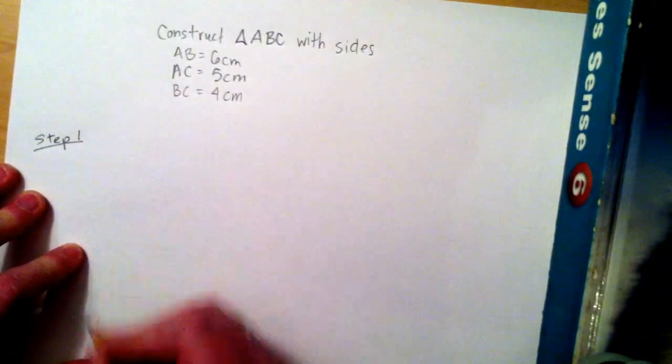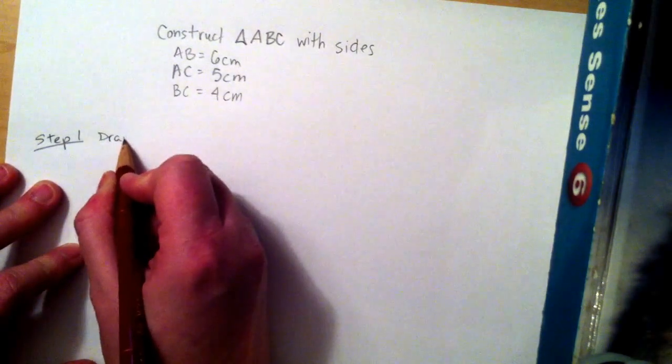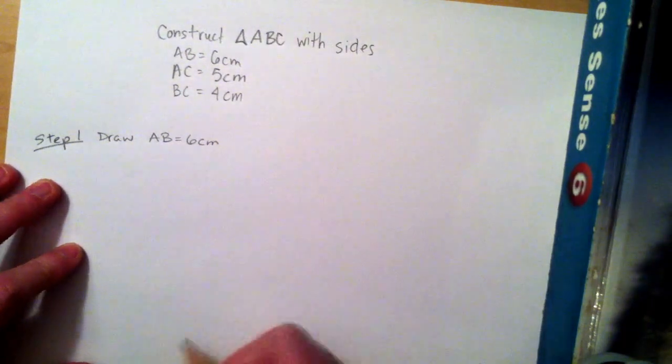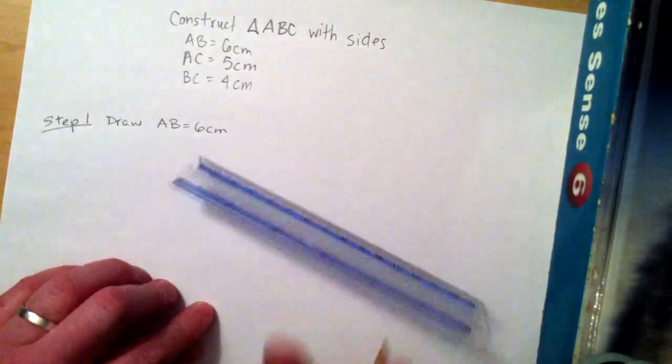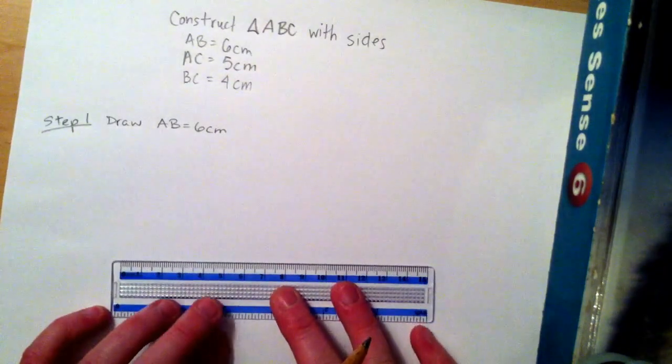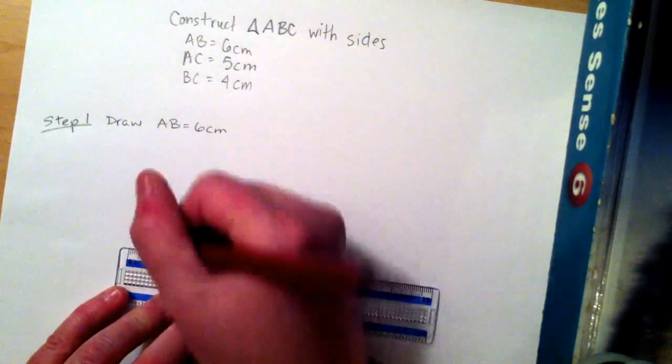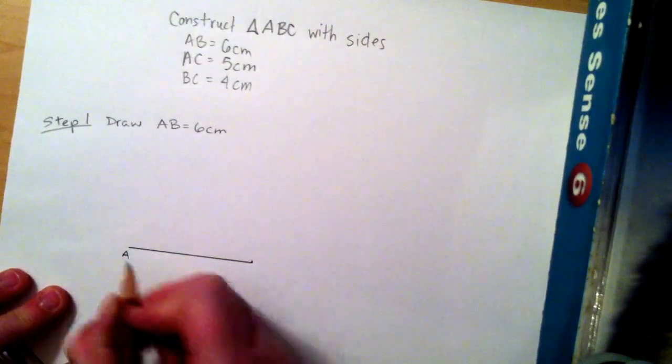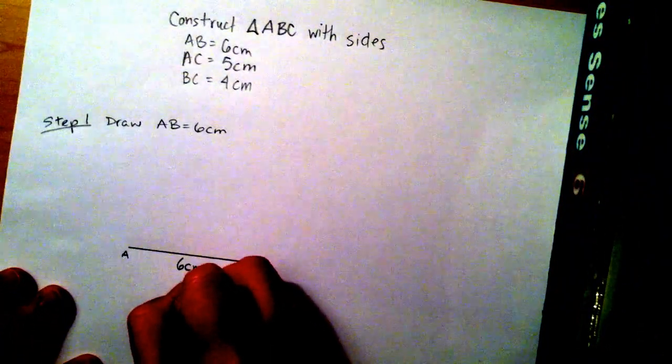The tools that we're going to use are a protractor, a ruler, and a compass. But our first step will be to draw line AB at 6 cm. So I take my ruler and we draw a 6 cm line like so and label it AB and also mark it with 6 cm.